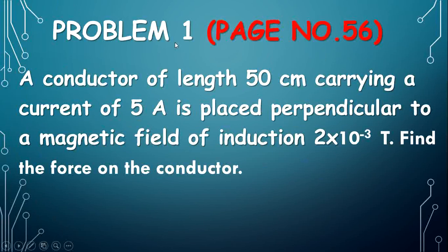Problem 1, page number 56. A conductor of length 50 cm carrying a current of 5 Ampere is placed perpendicular to a magnetic field of induction 2 into 10 power minus 3 Tesla. Find the force on the conductor.